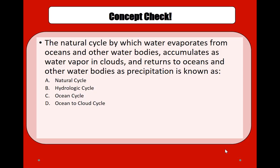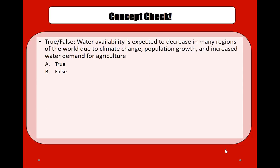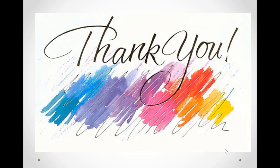Let's do some quick concept checks. The natural cycle by which water evaporates from oceans and other water bodies, accumulates as water vapor in clouds, and returns to oceans as precipitation is known as the hydrologic cycle. Also: water availability is expected to decrease in many regions of the world due to climate change, population growth, and increased water demand for agriculture — true or false? True.